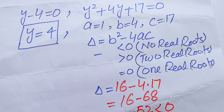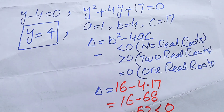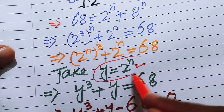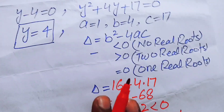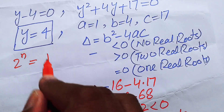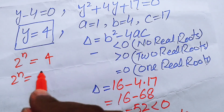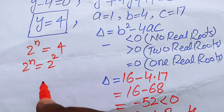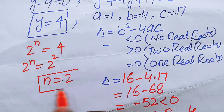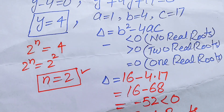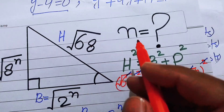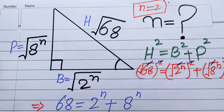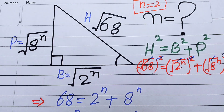From case one, y equals 4. Recalling our substitution y equals 2 to the power of n, we have 2 to the power of n equals 4. Writing 4 as 2 squared, the bases are equal, so equating exponents gives n equals 2. This is the final answer. Thank you for watching — please subscribe to my channel for more exciting videos.